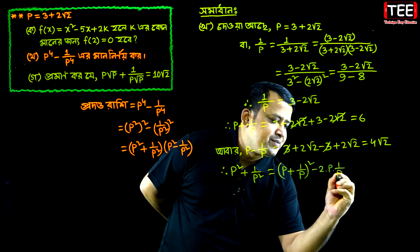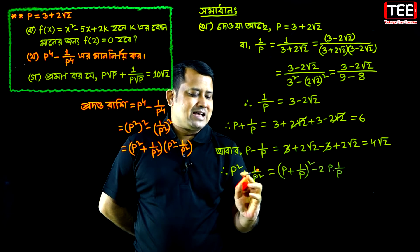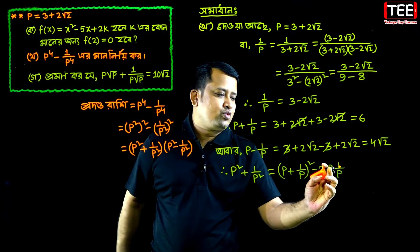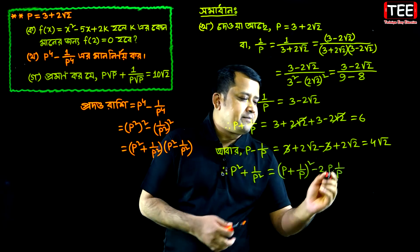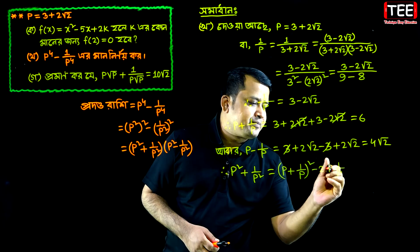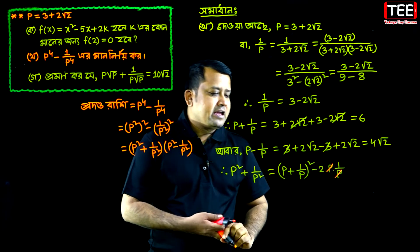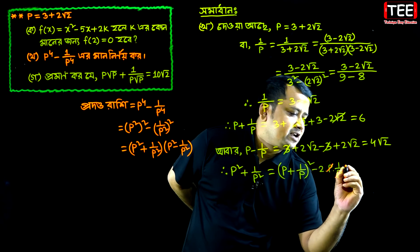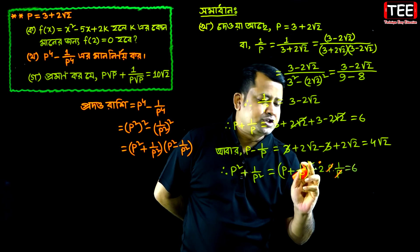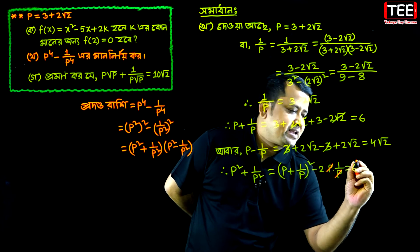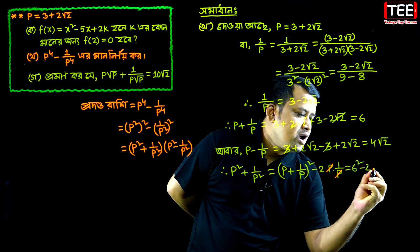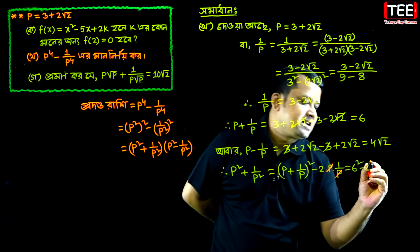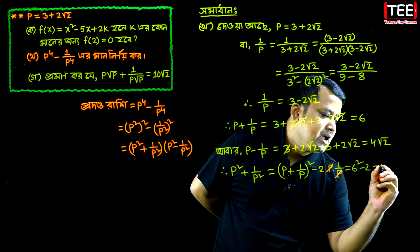Using the identity A squared plus B squared equals (A plus B) whole squared minus 2AB, with p plus 1 by p equal to 6. If we square, that gives 6 squared minus 2, so 36 minus 2 equals 34. Therefore p squared plus 1 by p squared equals 34.